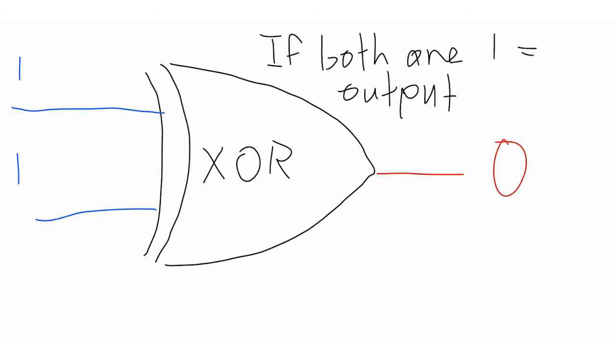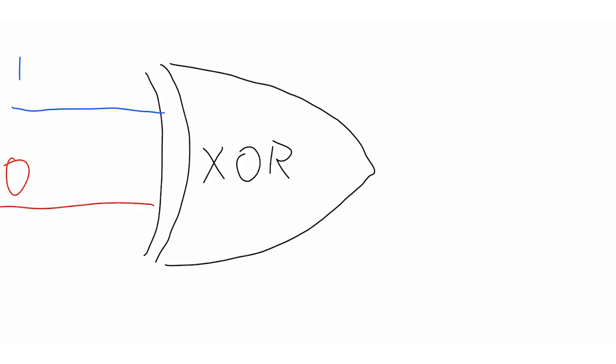It only accepts OR inputs. It will not accept an AND input like a regular OR gate. Only one input can be 1, the other one must be 0, or else it will return 0.